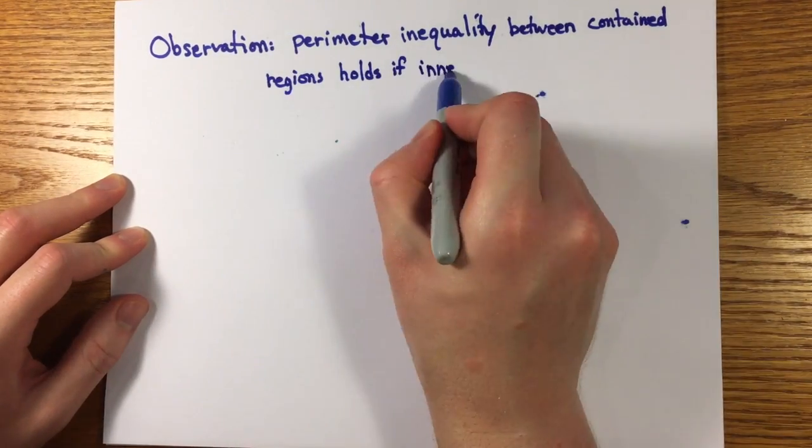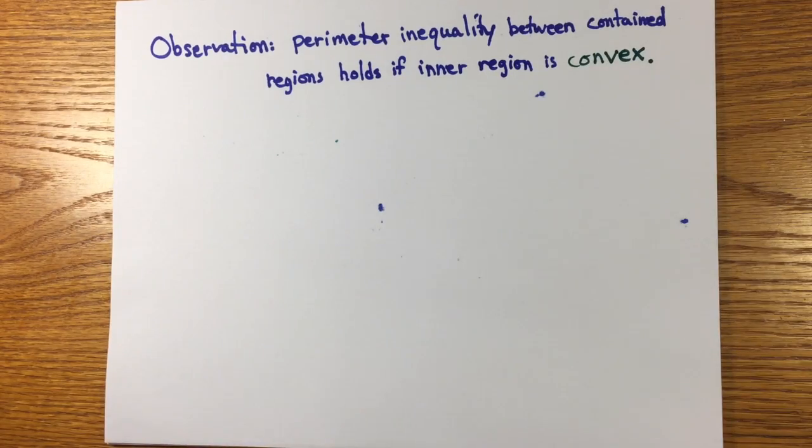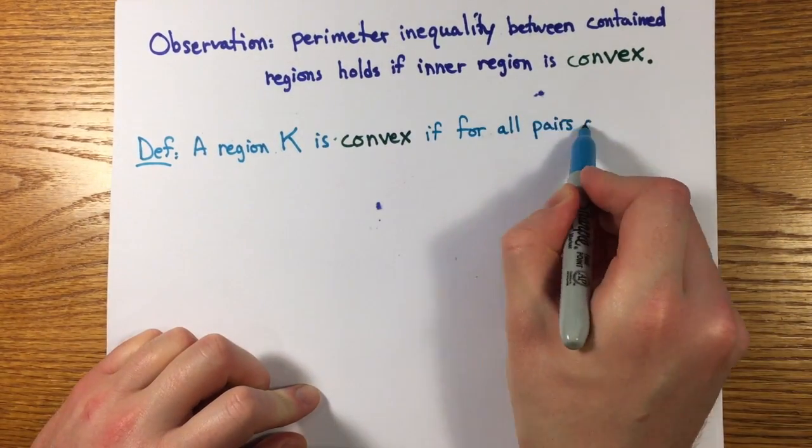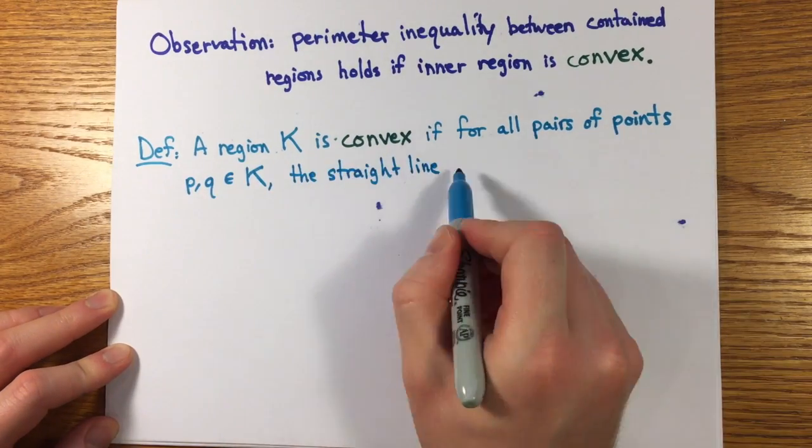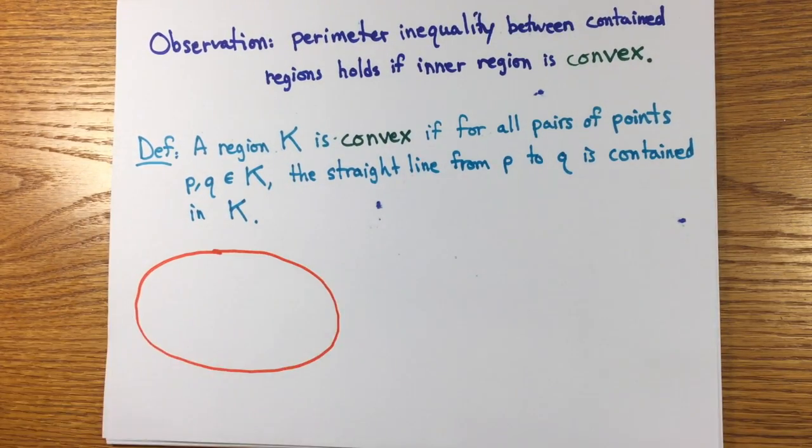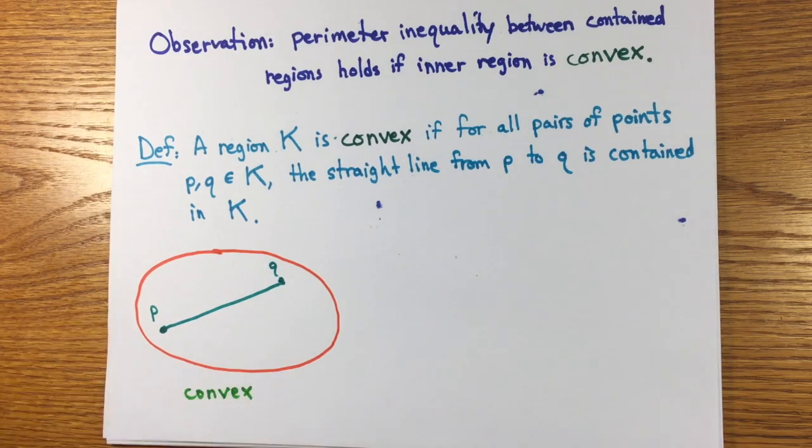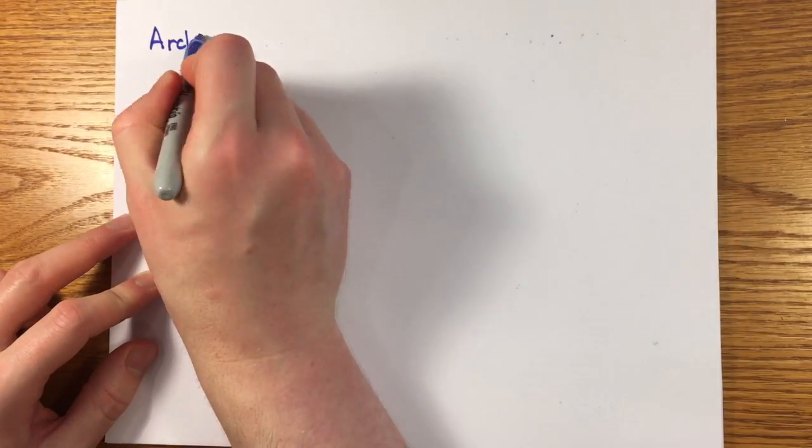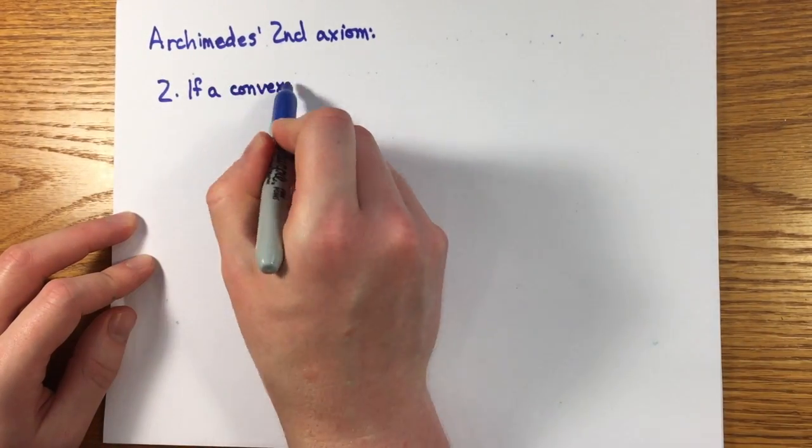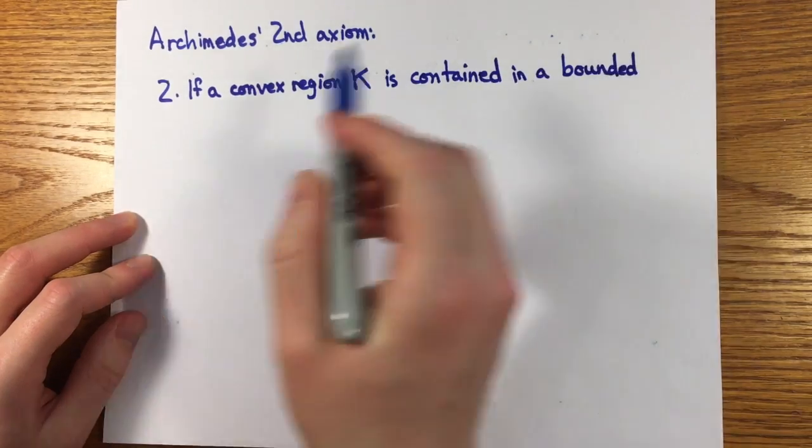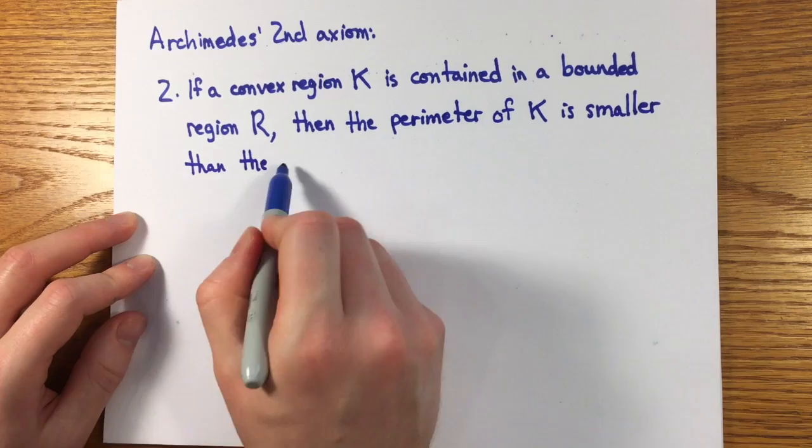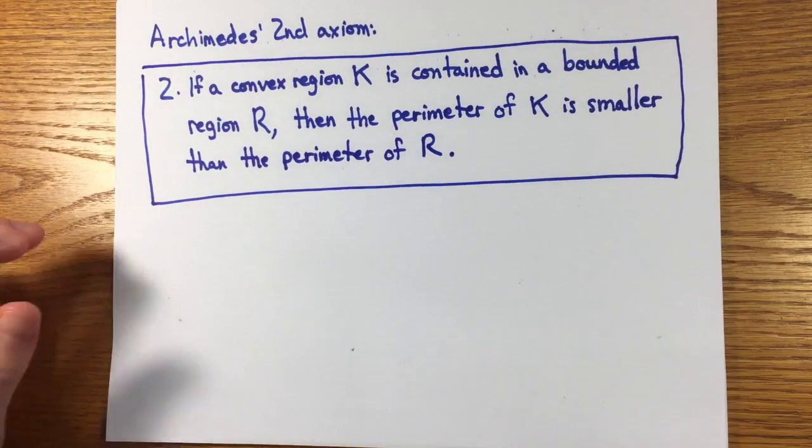Archimedes hit upon a criterion for curves that disallowed the wiggling, convexity. I'm going to use a more modern definition of convexity for convenience that refers to the region enclosed by a curve rather than the curve itself, namely that a region is convex if, given any two points in the region, p and q, the line segment joining them is entirely contained within the region. Archimedes' second axiom can then be stated if a convex region k is contained in another bounded region r, then the perimeter of k is smaller than the perimeter of r.